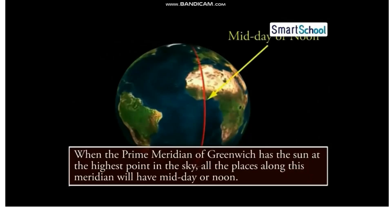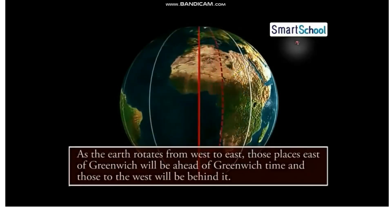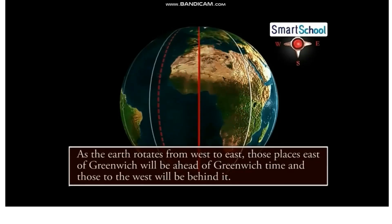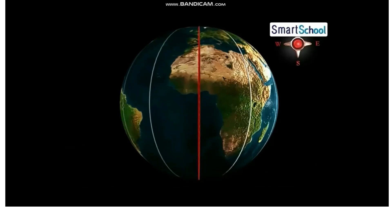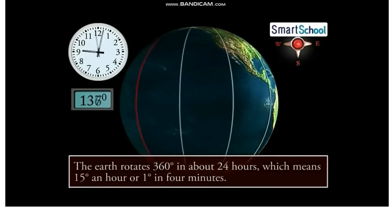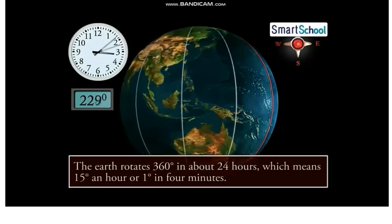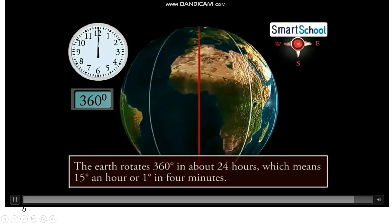When the prime meridian of Greenwich has the sun at the highest point in the sky, all places along this meridian will have midday or noon. As the Earth rotates from west to east, those places east of Greenwich will be ahead of Greenwich time and those to the west will be behind it. The Earth rotates 360 degrees in about 24 hours, which means 15 degrees per hour, or 1 degree in 4 minutes.